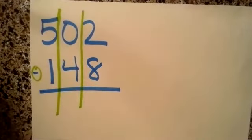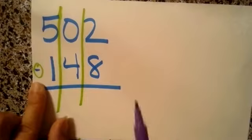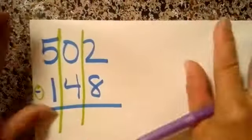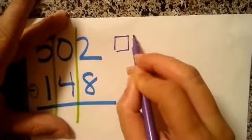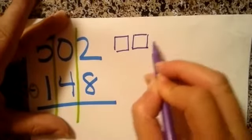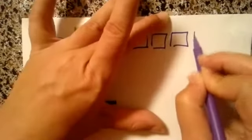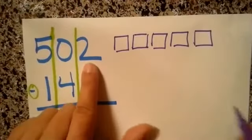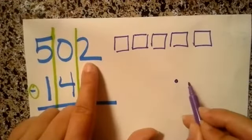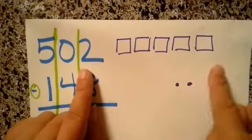Now, because we are subtracting, we only have to draw that top number. So let's draw that top number. One, five flat, five flat, and then two units. You see, we don't have any tens.